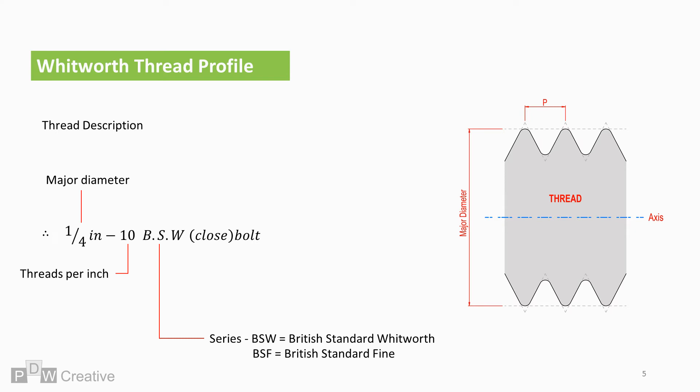BSW represents the thread form and series. For this example, BSW represents a coarse pitch, P, with a low number of threads per inch.